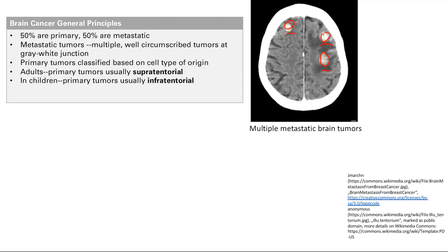These primary tumors can be from astrocytes, from oligodendrocytes, etc. The other way we can classify them is whether they appear primarily in adults or in children.